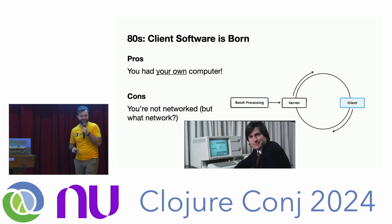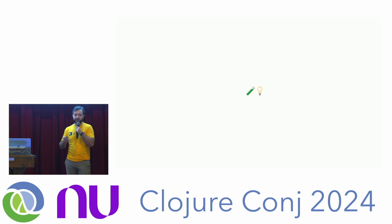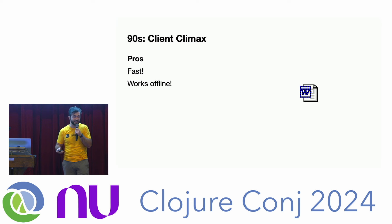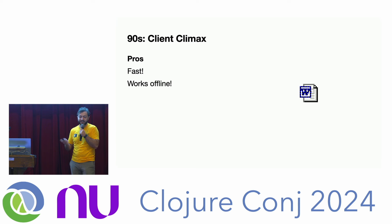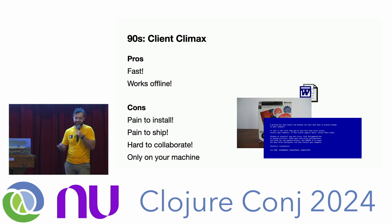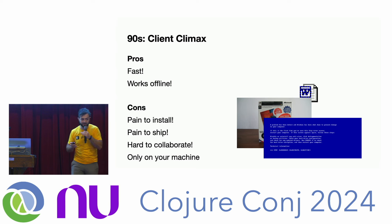With client software you could do GUIs and cool things, and you had your own computer — though you weren't networked. That wasn't so bad in the 1980s because Ethernet had just come out. Client software kept getting better. By the 90s we reached a climax: Microsoft Word. It was complicated software, it was fast, it worked everywhere. If you lugged your giant PC onto a plane, you could use it on the plane.